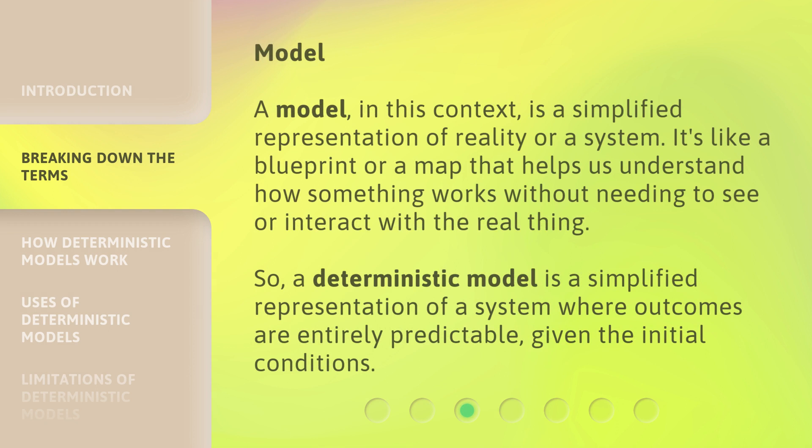Model: a model, in this context, is a simplified representation of reality or a system. It's like a blueprint or a map that helps us understand how something works without needing to see or interact with the real thing. So, a deterministic model is a simplified representation of a system where outcomes are entirely predictable, given the initial conditions.